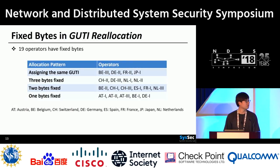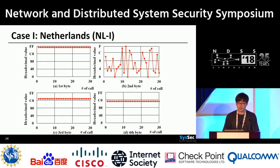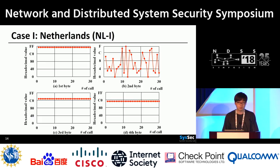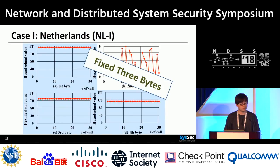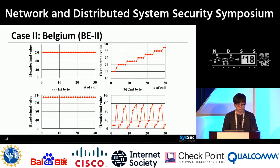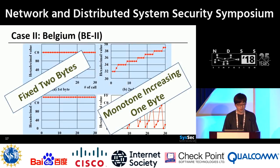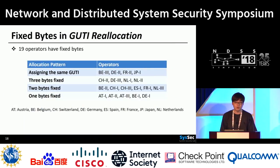This figure shows the GUTI reallocation of a Dutch carrier for a single customer, showing changes of one byte in GUTI. The x-axis represents the number of calls and the y-axis represents the byte value. As you can see, a Dutch carrier fixed three bytes in the GUTI. Let's take one more example: this Belgian carrier has two bytes fixed and one monotonically increasing byte. In summary, out of 28 carriers, 19 carriers use some bytes that are fixed in GUTI reallocation.